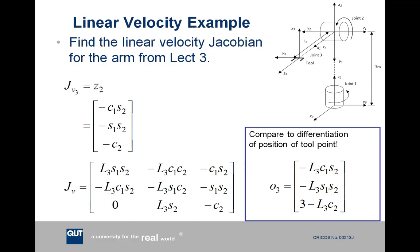The Jacobian contributed by it is just Z2 as defined in reference frame 0. We get this from the third column of the T3,0 matrix and the first three elements in that third column. That's minus C1S2, minus S1S2, and minus C2. That forms the third and final column of our linear velocity Jacobian, which we have at the bottom left in general form. This is not for any specific configuration, just the general form of the Jacobian.